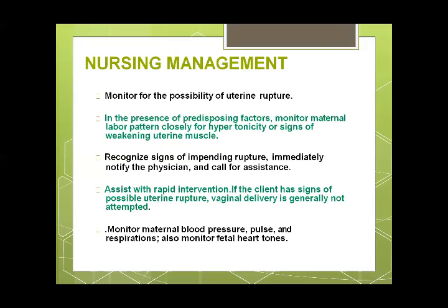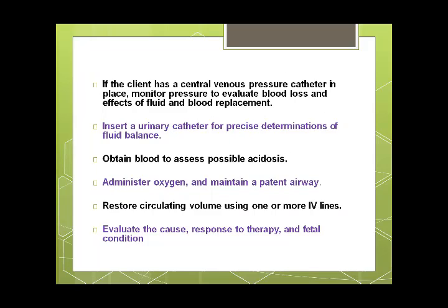Prevention requires awareness of predisposing factors. Monitor maternal blood pressure, pulse, respiration, and fetal heart rate in a lady being given trial of labour after a previous cesarean section or in a grand multipara. If rupture occurs: obtain blood for cross-matching, administer oxygen, maintain airway and circulatory volume, then proceed to surgical management.